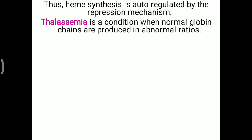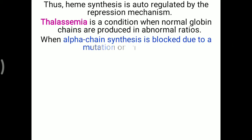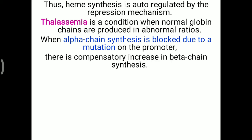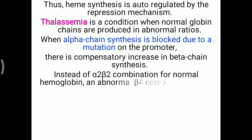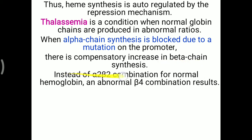One condition to correlate with this repression mechanism is thalassemia, an important condition related to abnormality of hemoglobin, where normal hemoglobin chains are produced in an abnormal ratio. In adult hemoglobin, there are normally alpha and beta chains. When alpha chain synthesis is blocked due to a mutation in the promoter region, there is a compensatory increase in beta chain synthesis. Instead of the normal alpha-2 beta-2 combination, an abnormal beta-4 combination is seen. This too is explained with the help of the repression mechanism.